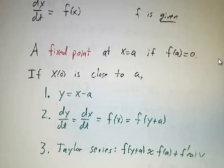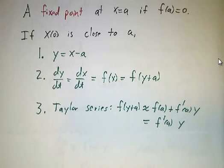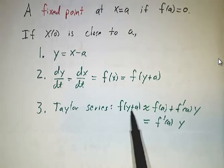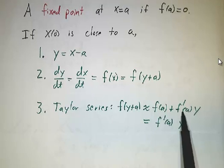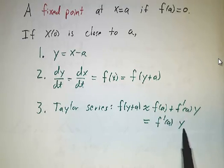You approximate that with a Taylor series. You get f(x), which is f(y + a), that's f(a) + f'(a) times y, but f(a) was 0, so that's f'(a) times y.